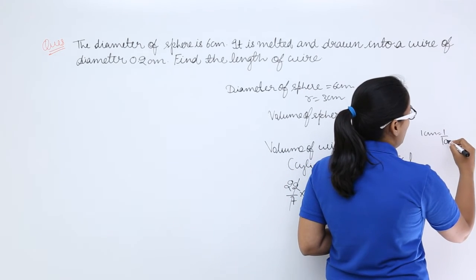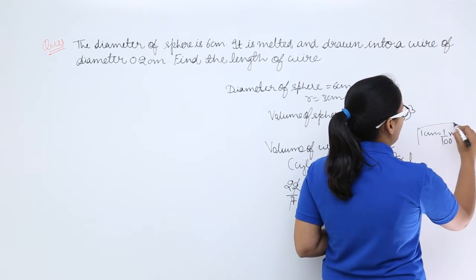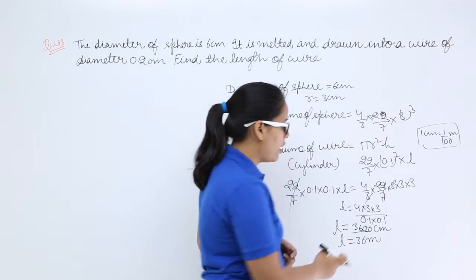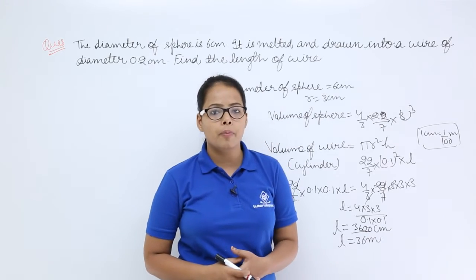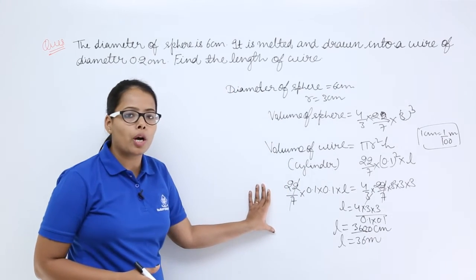1 centimeter is equal to 1/100 meter. So what I have done here, I have multiplied this with 1/100 to convert this into meters. I really hope there should be no doubt.